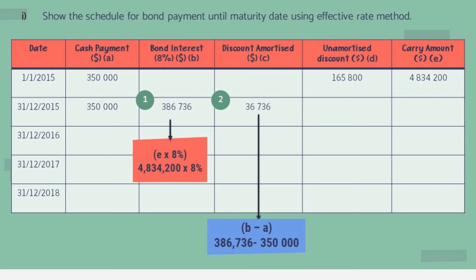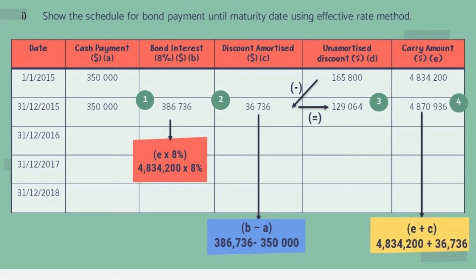Next, we calculate the discount amortized (column C) by subtracting cash payment (column A) from bond interest (column B). Then for column D — unamortized discount — we subtract the amortized discount from the previous unamortized discount balance. This tells us the remaining discount balance going forward. The unamortized discount balance becomes $129,064.